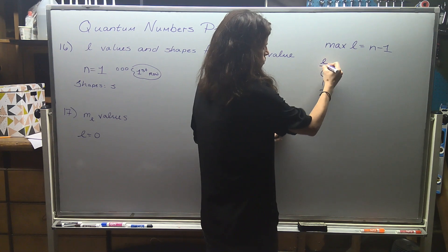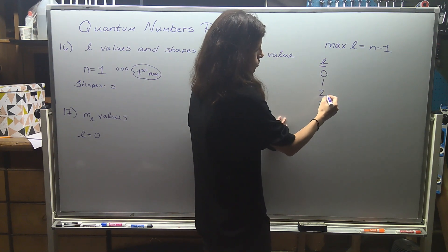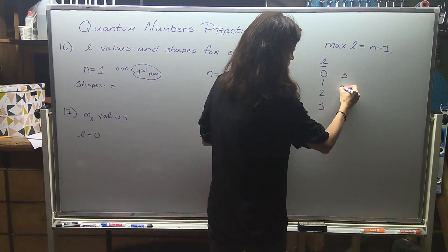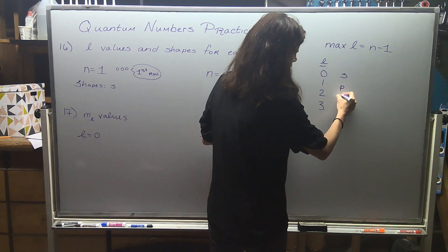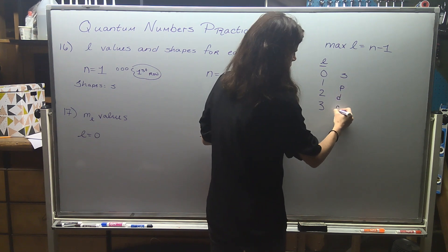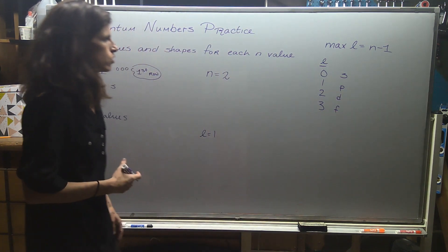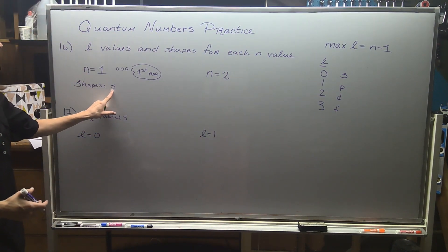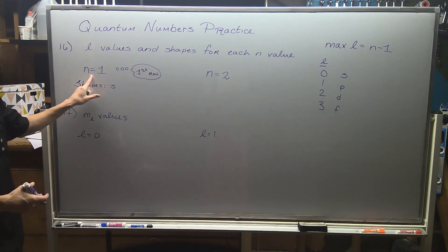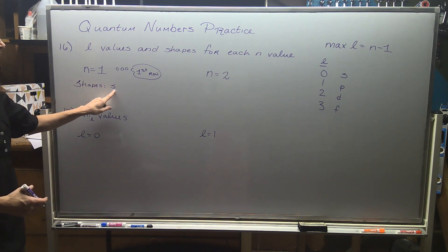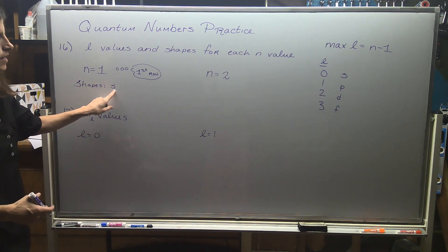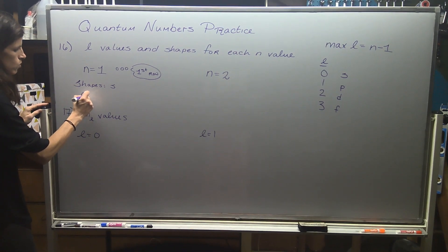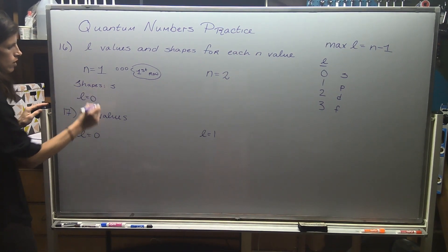Your l values are 0, 1, 2, and 3, and they correspond to s, p, d, and f shaped orbitals. If the only shape that we see in the first row is s, then my l value is just going to be 0.